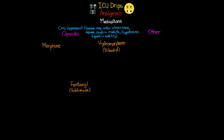Starting with morphine: it has an active metabolite that accumulates in patients with renal impairment, so we need to keep an eye on those patients. Morphine can be given as a bolus, typically two to eight milligrams. When running as a continuous infusion, the range is typically one to ten milligrams per hour. It has an almost immediate onset and a duration that lasts about two hours.